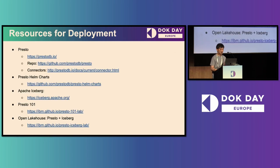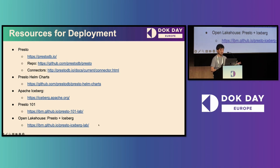Here is the information to help you set up the environment we described, starting with the Presto repository, the many available connectors, and the Presto Helm chart for setting up Presto on a Kubernetes cluster, as well as Apache Iceberg. We also have two workshop labs that we created to help users learn Presto and Presto plus Iceberg. These workshops are free, publicly available, and include step-by-step instructions on how to use and set up Presto, and how to set up Iceberg with Presto. That concludes my part — I will now hand over to Ted to share the solution for the ML lifecycle.